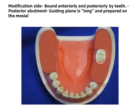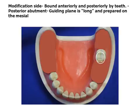On the modification side, guiding planes are long, that is two-thirds of the occlusal-gingival height, because the partial denture does not undergo anterior-posterior rotation to the same degree as the extension base side. The guiding planes are normally prepared on the proximal surface adjacent to the edentulous space. The proximal plate may be adjusted for over-extension if desired.